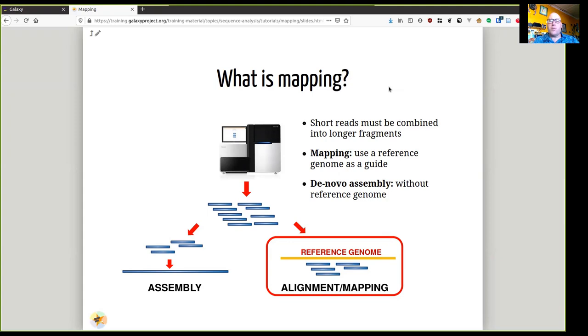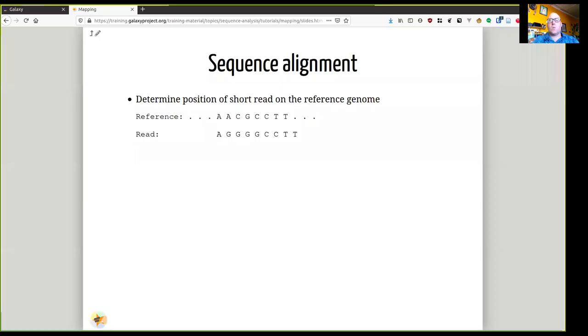We have two options at this point. If we have a reference genome, that is a complete genome or part of a genome from an organism, we can use mapping to associate the sequence data by its sequence similarity with the position on the reference genome. If we do not have that or if we want to build a new genome, then we can use a process called assembly to assemble the short reads into a longer genome.